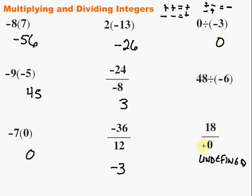Finally, this one right here, we've got 48 divided by negative 6. Forget the signs for a second. 48 divided by 6 is 8. And then, positive divided by a negative gives me just a negative.